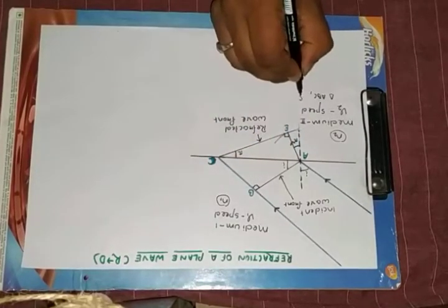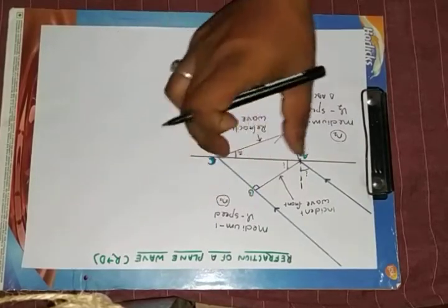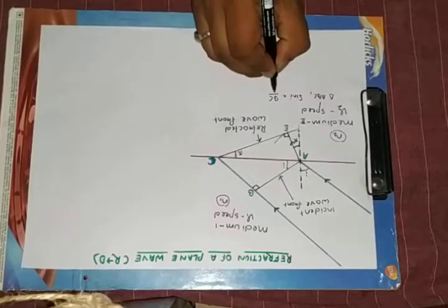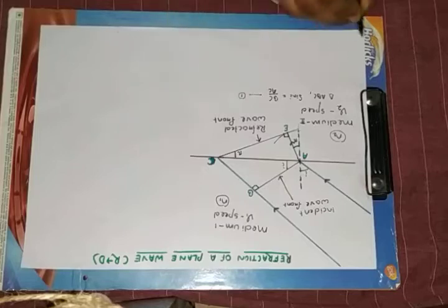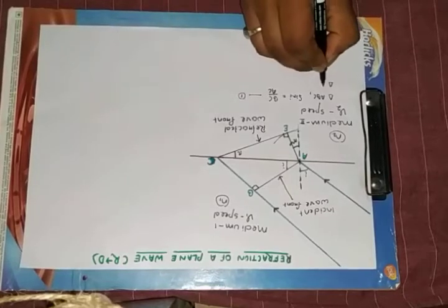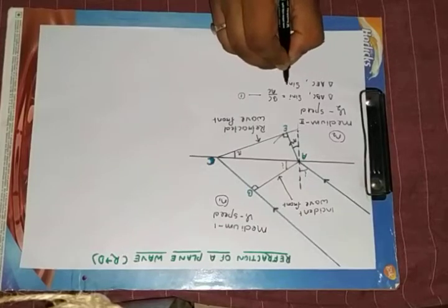From triangle ABC, sin i equals perpendicular by hypotenuse, BC by AC. From triangle AEC, sin r